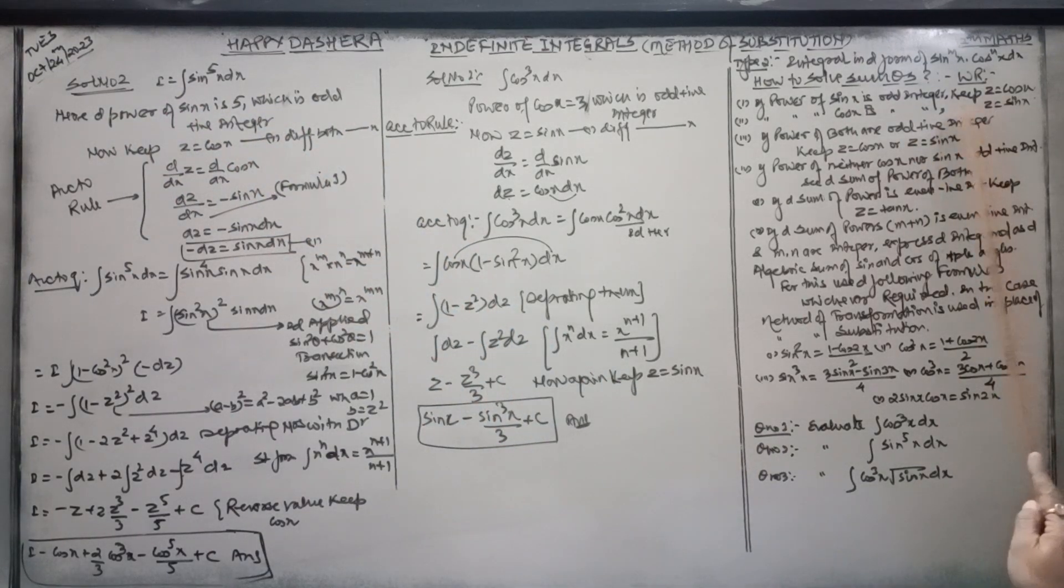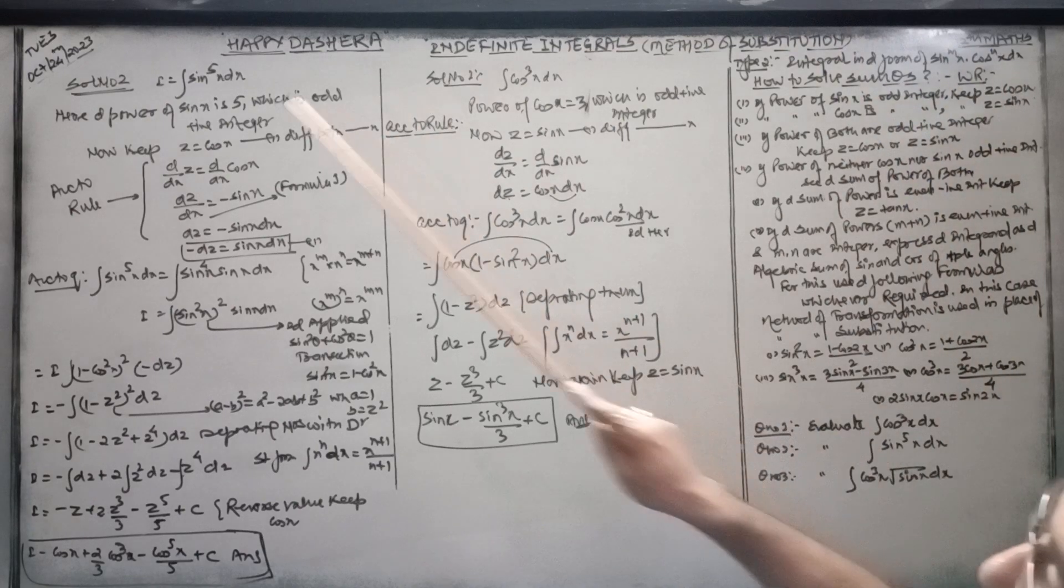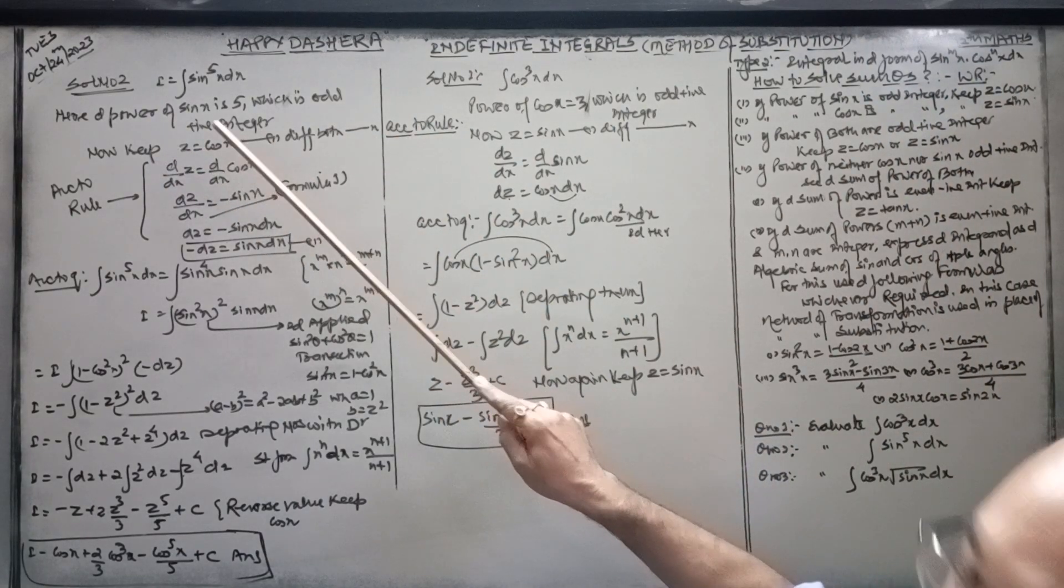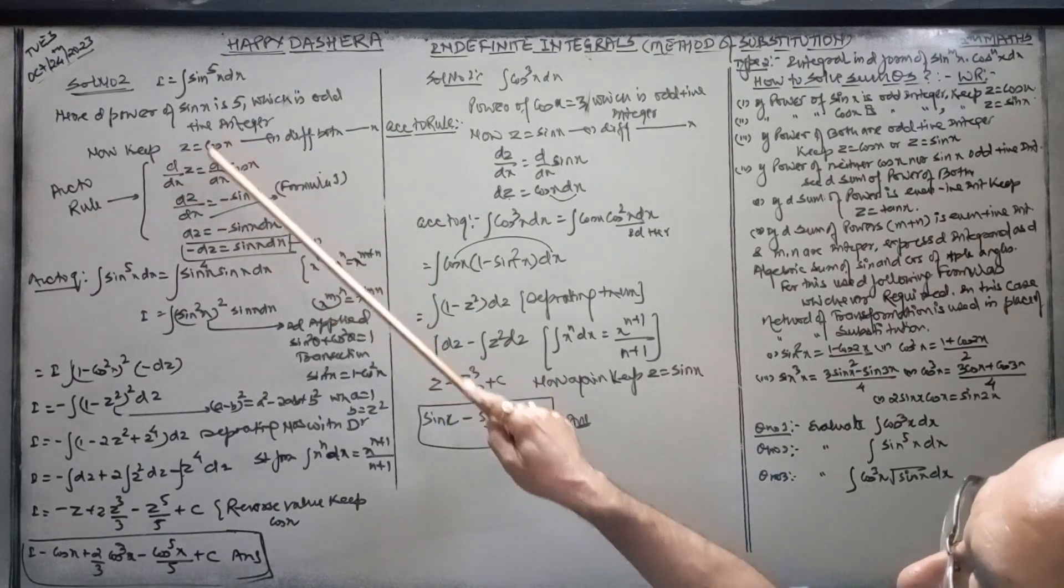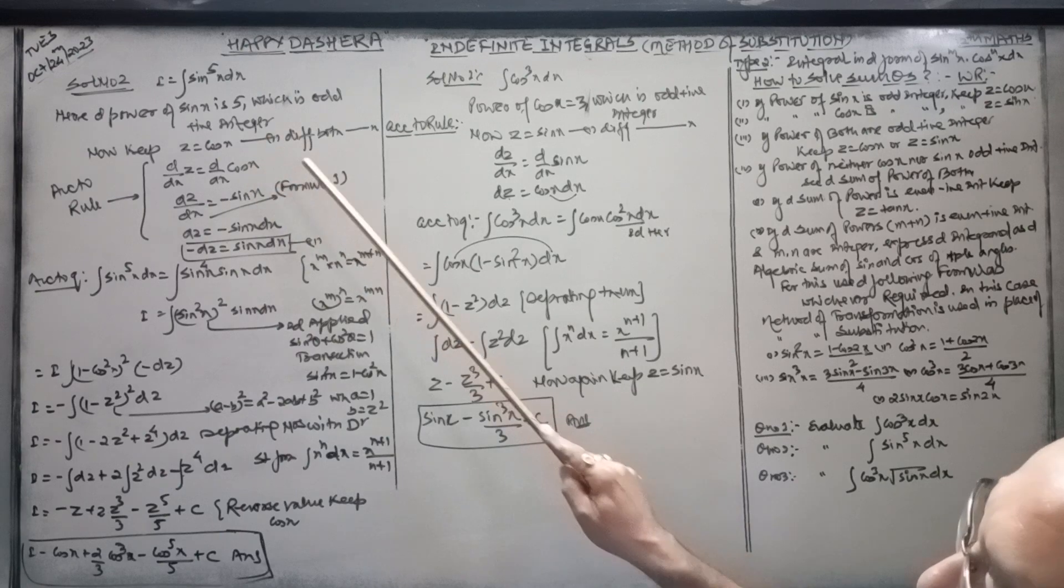According to this rule, z is equal to cos x. First step, differentiation. So d/dx of z is equal to d/dx of cos x. Here is the first formula.